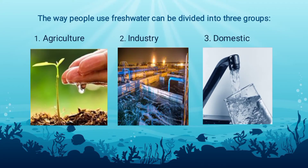The way people use fresh water can be divided into three groups: first is for agriculture, second is for industry, and third is for domestic use.